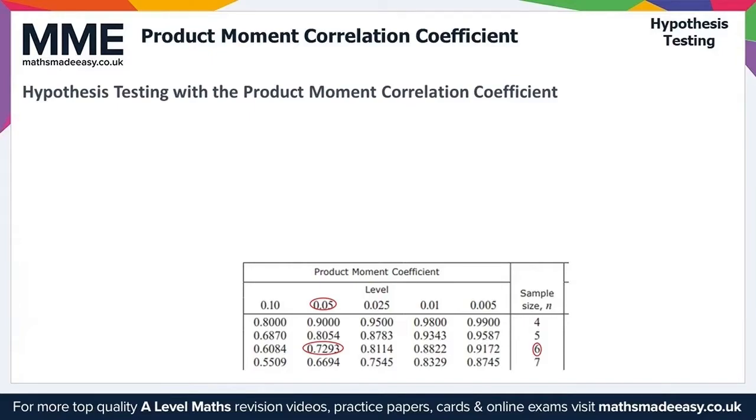Now there's two things that we need to denote first. We need the population parameter. So if we write this down here, the population parameter. And the population parameter, we denote it here using the Greek letter rho. So that's the rho that we use to denote the population parameter. And this is the PMCC of the population.